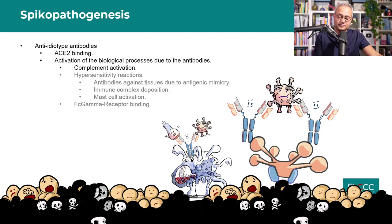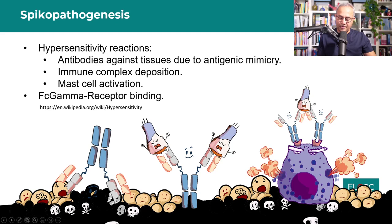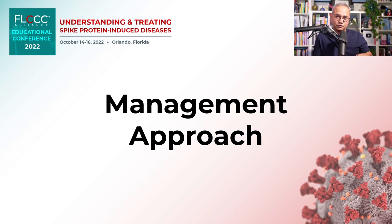There are hypersensitivity reactions to summarize: type 1 when spike binds directly to tissue; type 3 when spike-antibody complexes bind to third-party tissue; and additionally, antibodies against spike can prime mast cells, so when spike proteins are present and mast cells have antibodies on them, mast cell activation syndrome can occur as well. We will stop here for the management approach and continue next time.